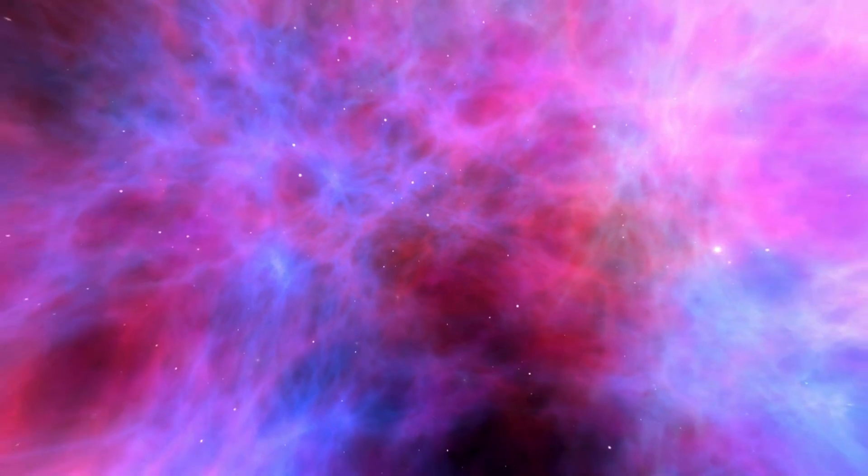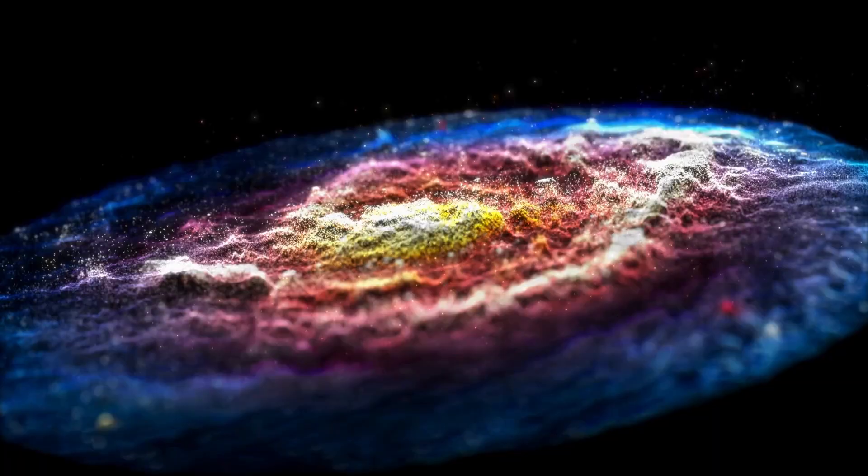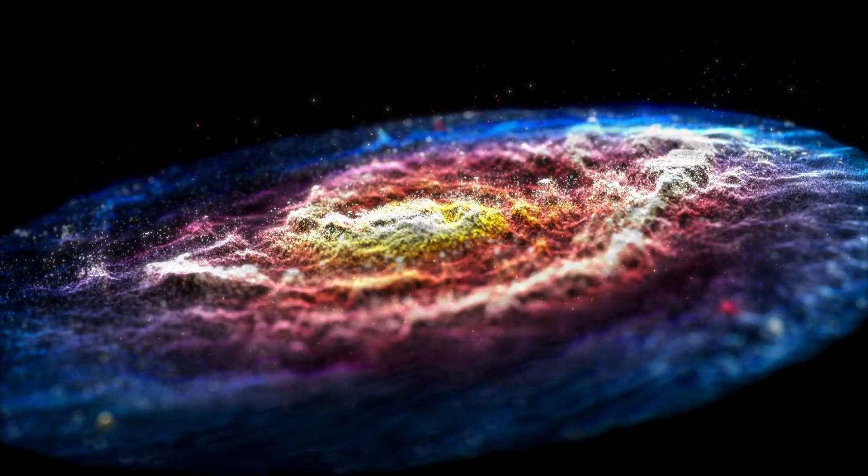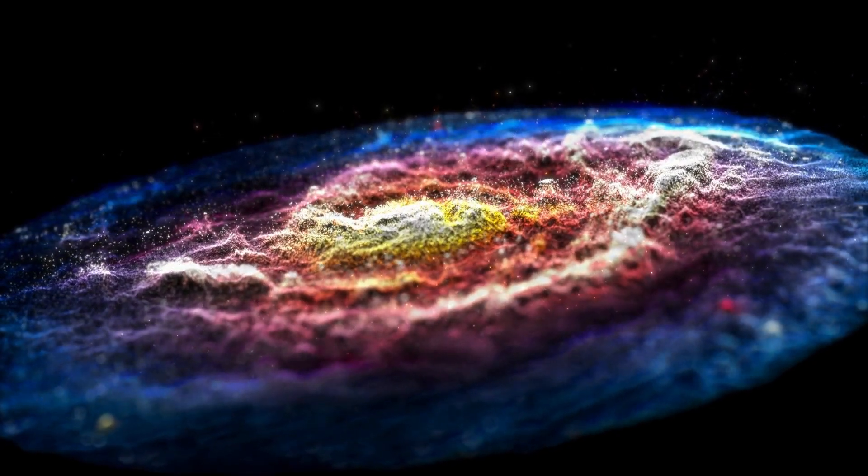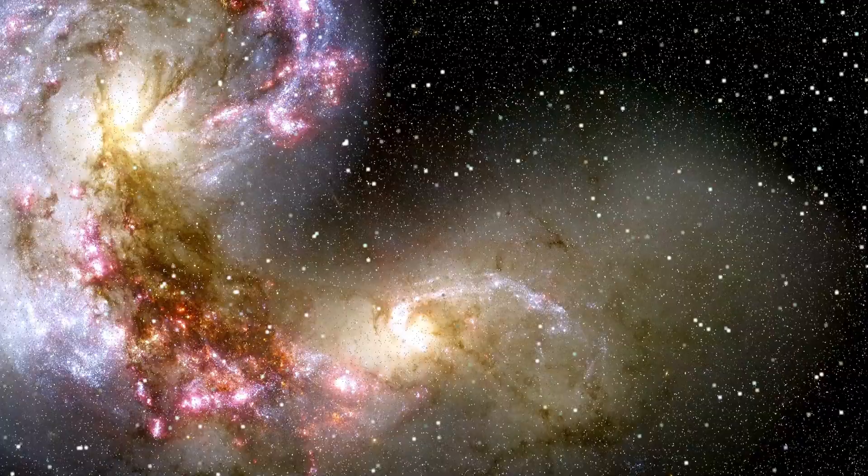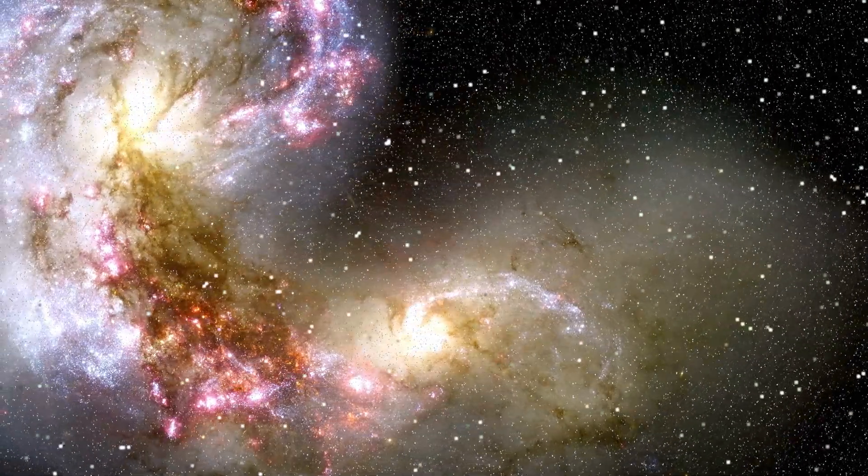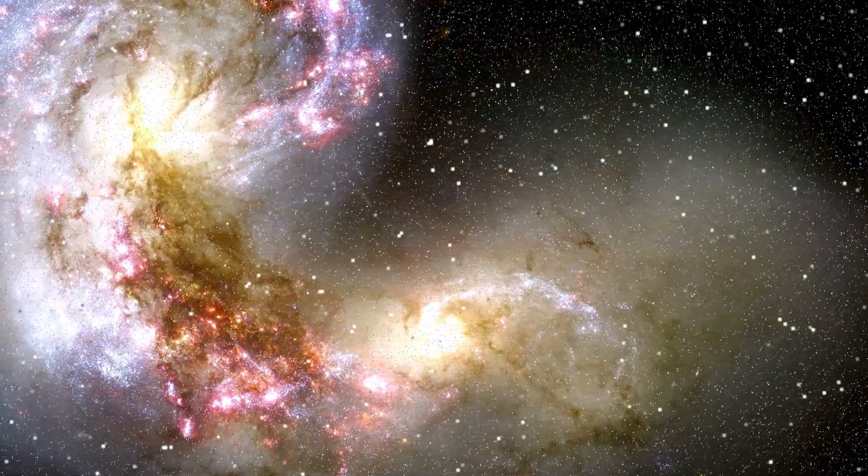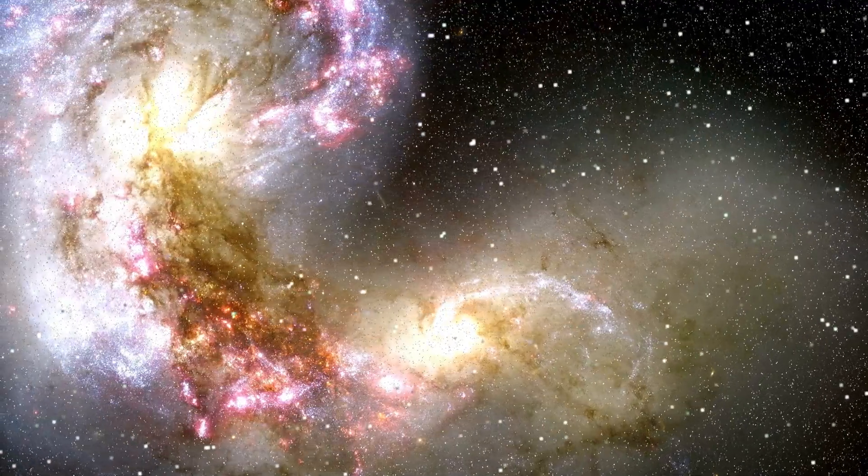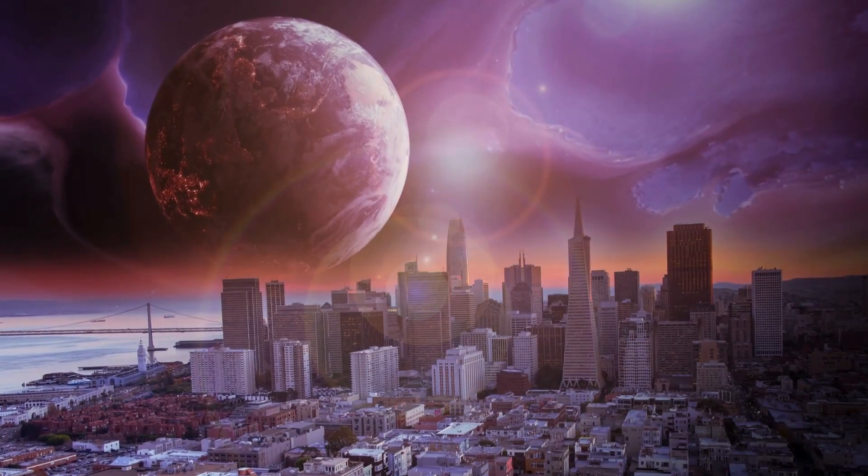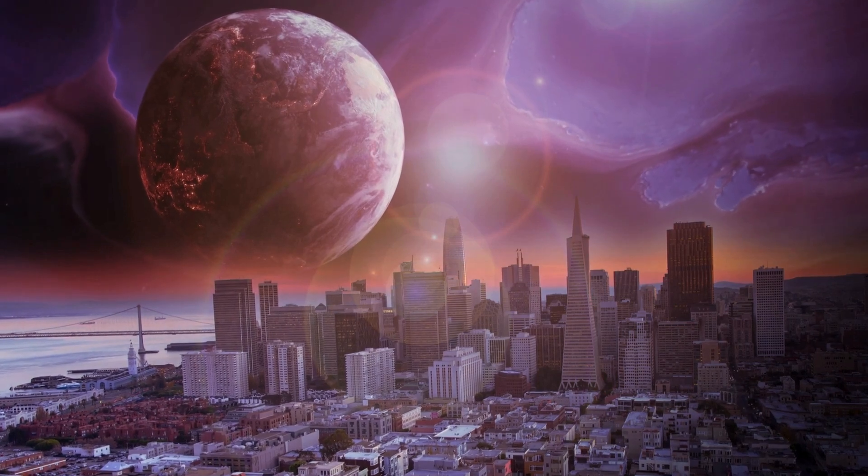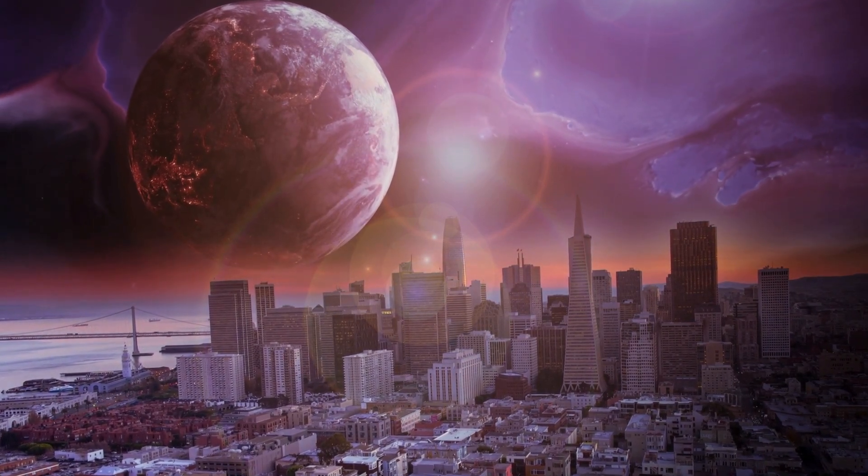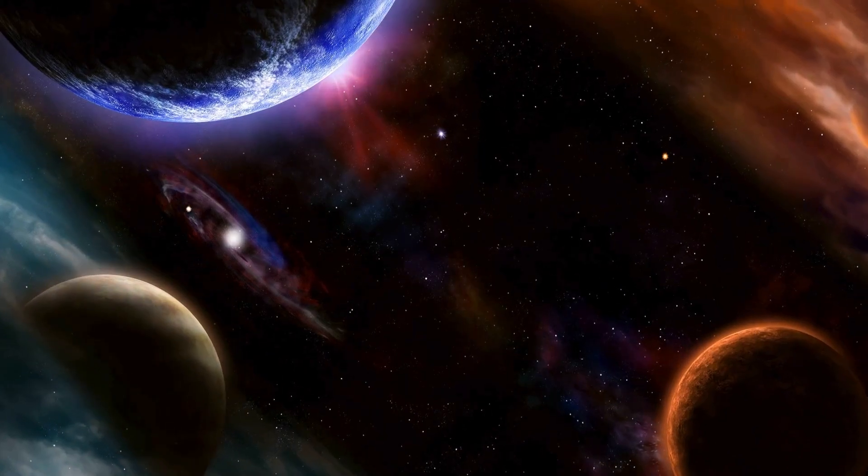On Jupiter's moon Europa, there are signs of cryovolcanism with features such as Thera and Thrace Macula. These regions exhibit evidence of ice flows and potential cryovolcanic activity, suggesting that Europa, like Ceres, might have subsurface oceans that occasionally breach the surface. Another example is Enceladus, a moon of Saturn, which has ice geysers erupting from its south polar region, driven by subsurface water interacting with the moon's rocky core.